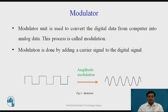Let us discuss the modulator block. The modulator is a unit which is used to convert the digital data received from the computer into an analog signal for transmission over the telephone lines. The modulation is done by adding a carrier signal to the digital signal. Figure 3 shows how the digital data is converted into analog by the process of amplitude modulation.